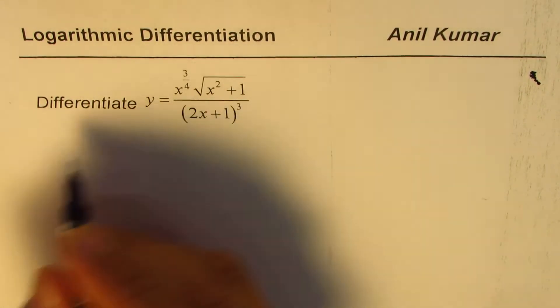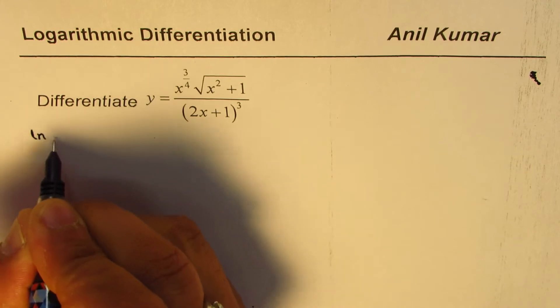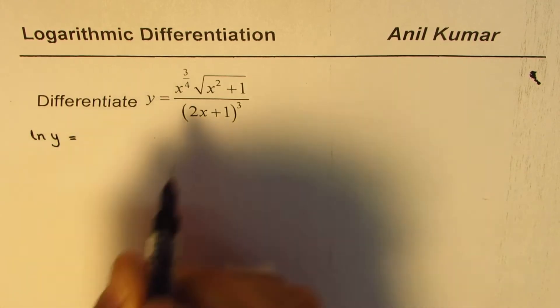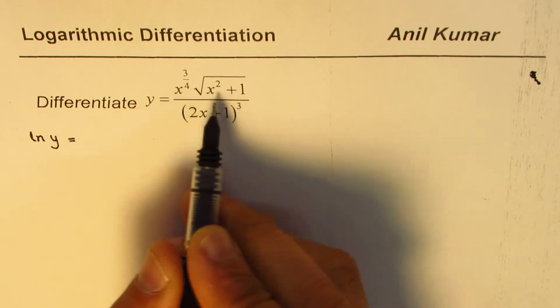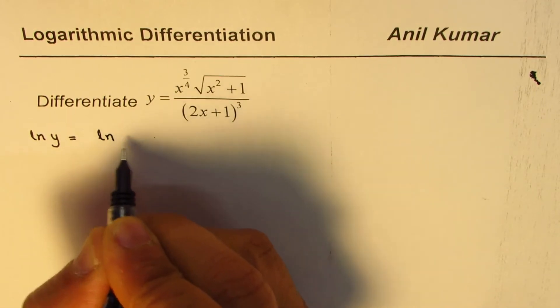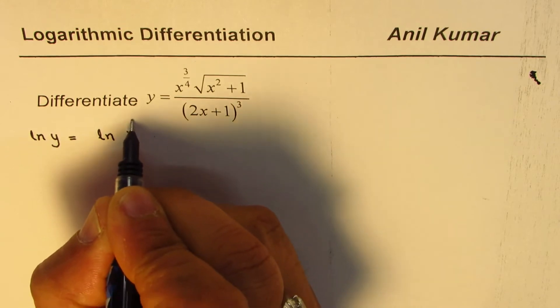So if you take log both sides, this product will be treated as a sum. So we can say this is ln(x^(3/4)) plus ln((x² + 1)^(1/2)) minus...